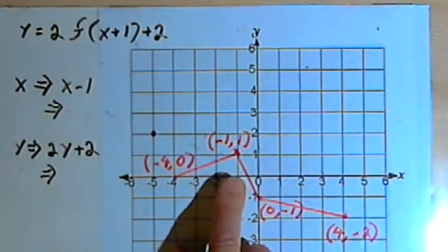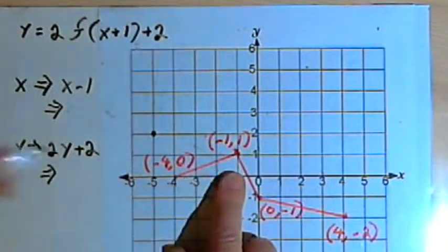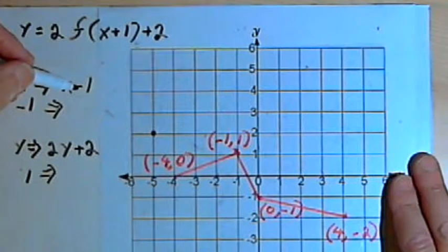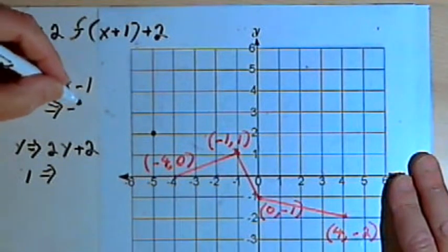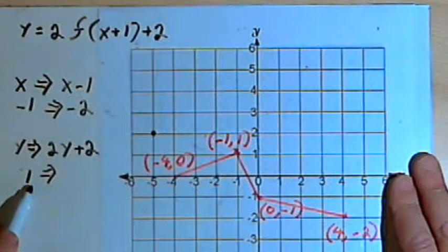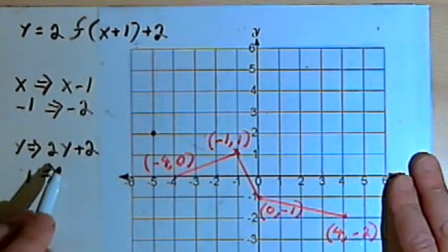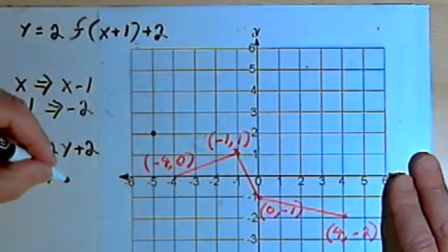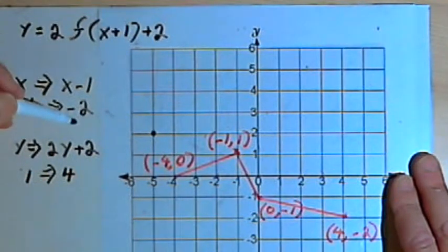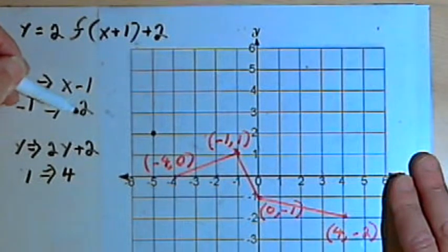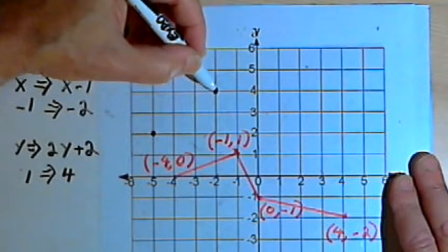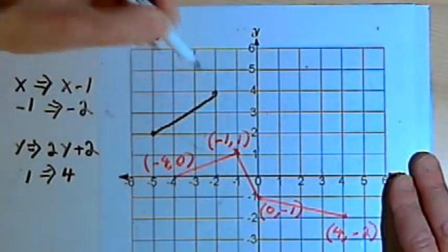The next coordinates I have marked are negative 1, 1. I want to take the x-coordinate, which is negative 1, subtract 1 from it — that becomes negative 2. I want to take the y-coordinate, which is positive 1, multiply it by 2, so that will be 2, and add 2, so that will be 4. This means I have a point at negative 2, 4. There's negative 2 and there's 4. We can connect those points.